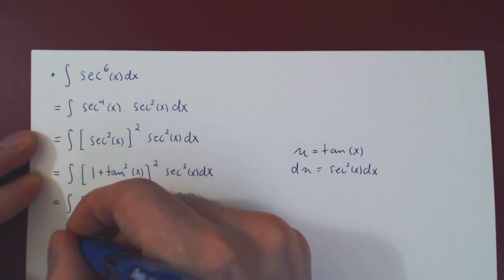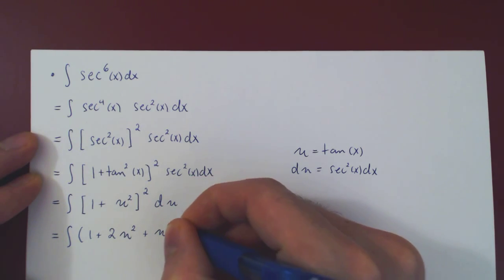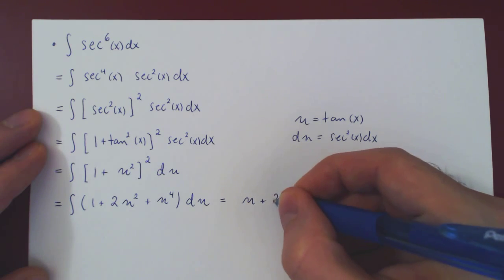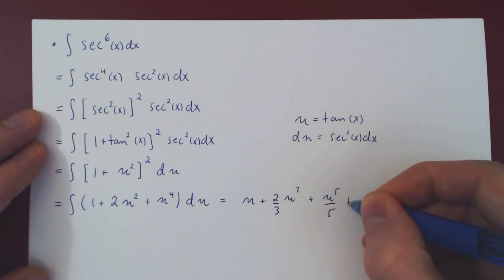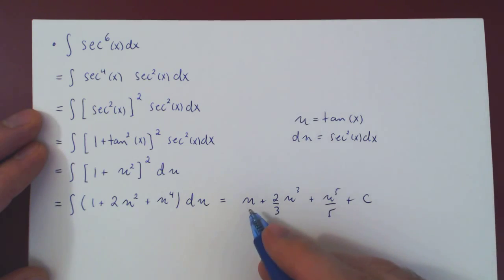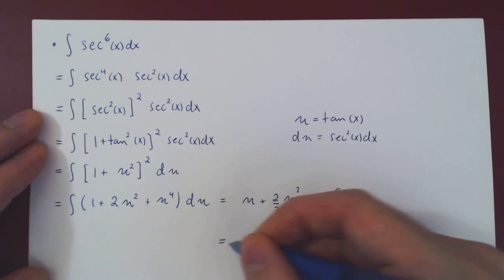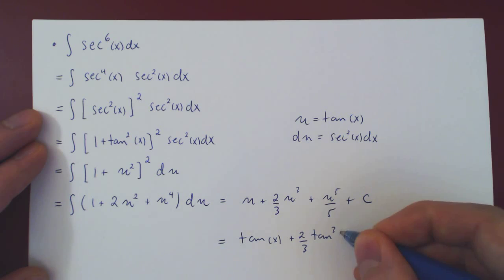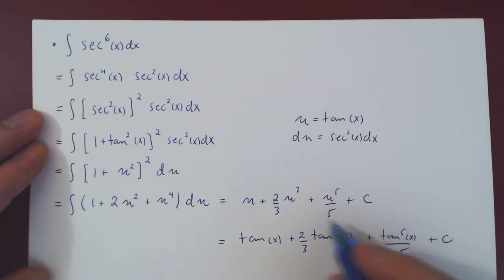We have to expand this out in order to be able to apply the power rule. So we'll have one plus two u squared plus u to the four. Simple power rule now: we get u plus two-thirds u cubed plus u to the five over five plus c. Finally, we want to give our answer as a function of x, so we replace u by tangent of x. This gives the final answer: tan(x) plus two-thirds tangent cubed of x plus tangent to the fifth of x over five plus c.